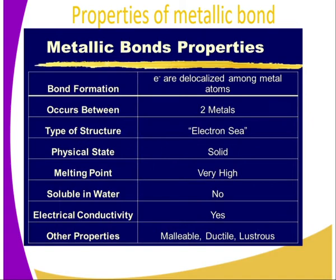What are the properties of metallic bonds? Number one, the bond formation is as a result of de-localized electrons among metal atoms. It occurs between two metals or two atoms of metals. The type of structure is electron sea. The physical state is solid, and they have very high melting point. They are not soluble in water — metals do not dissolve in water. They are good conductors of electricity.